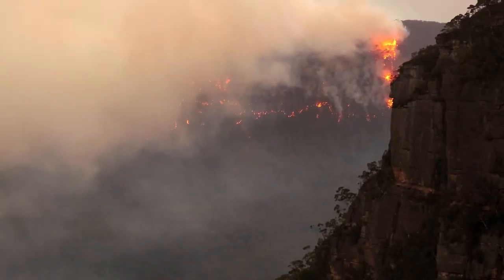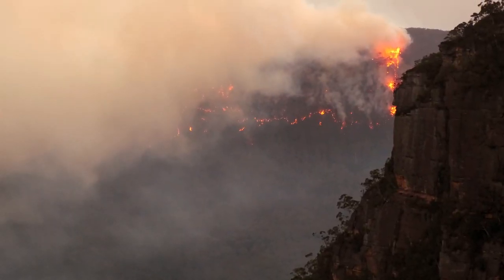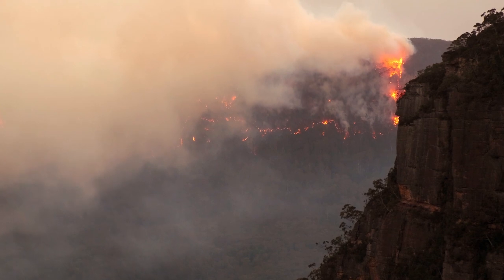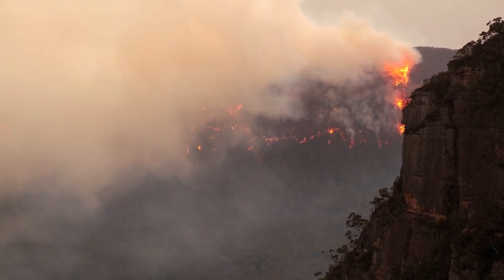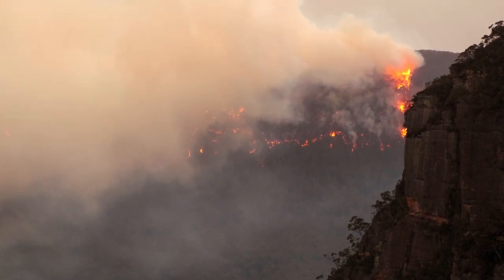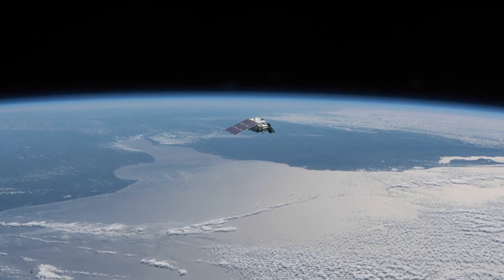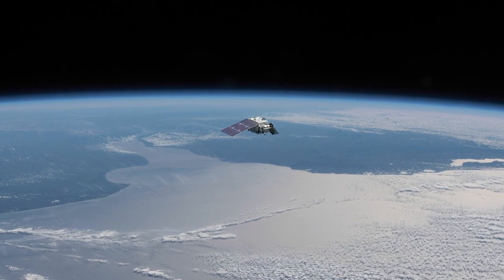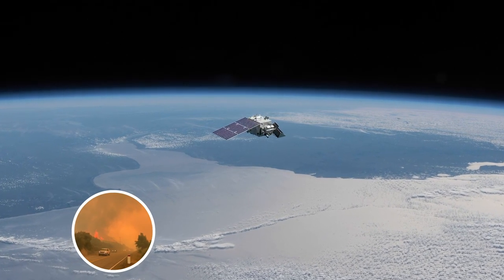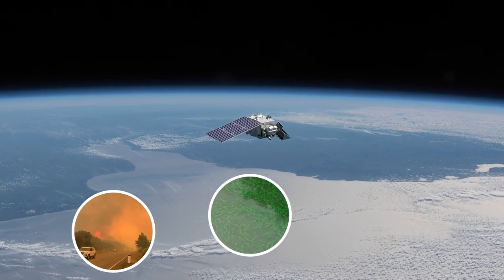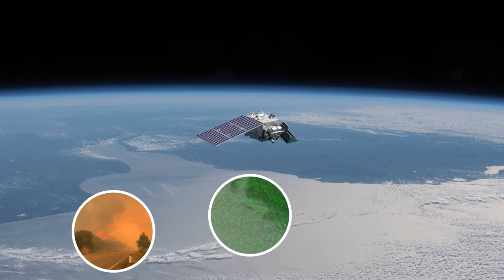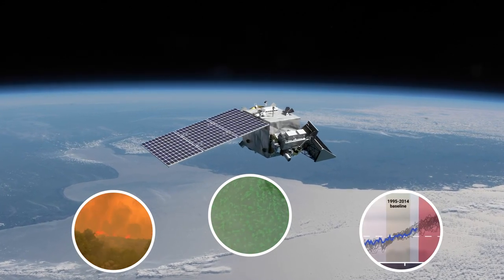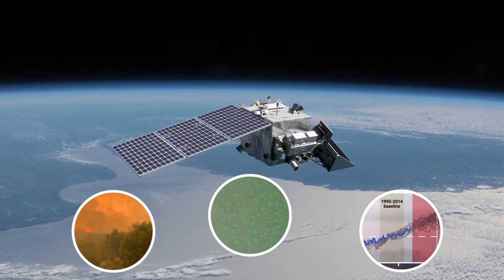The fires that tore through Australia are just one example of how Earth systems are linked in ways we're only beginning to fully understand. With data from PACE, we'll get a clearer picture of carbon as it links land use and fires, atmospheric aerosols and marine communities, and ultimately improves the data we put into climate models.